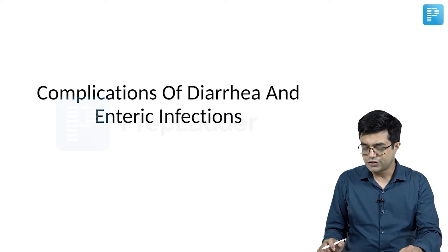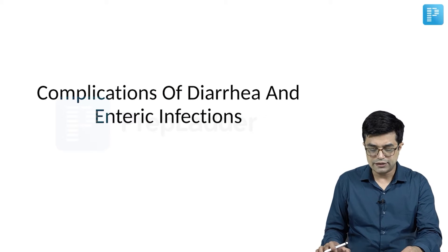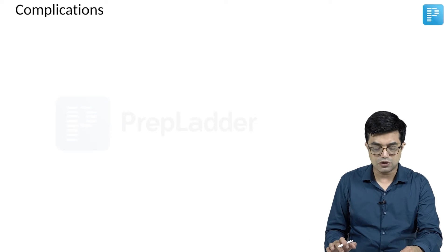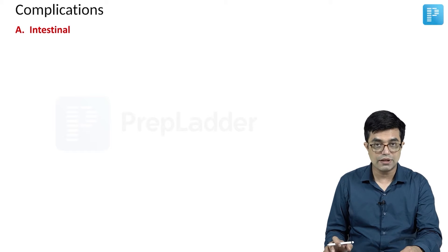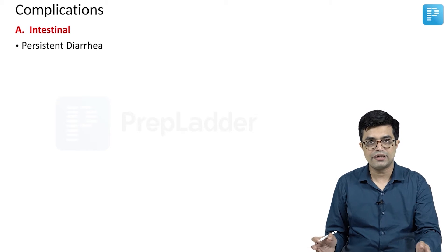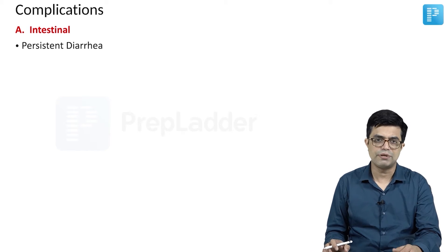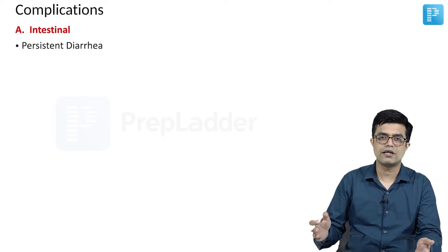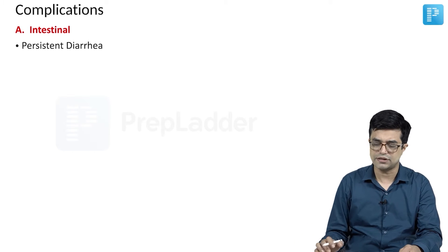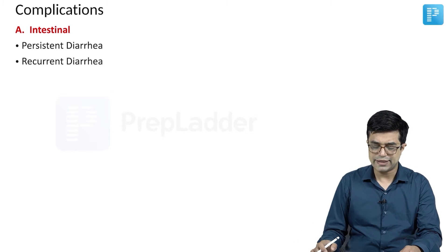What are the complications of diarrhea and the enteric infections? First, we will talk about the intestinal complications. There can be persistent diarrhea, where diarrhea begins acutely but lasts for 14 days or longer.